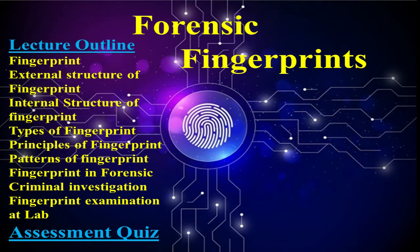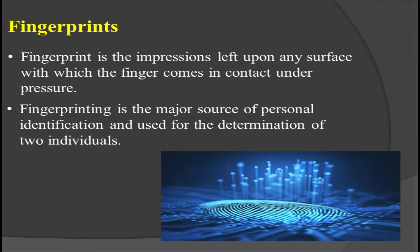Let's start. A fingerprint is the impression left upon any surface with which the finger comes in contact under pressure. When you put your finger on a surface and it takes your finger impression, that is basically a fingerprint. Sometimes it is visible, sometimes it is not visible — it depends upon the surface. Fingerprinting is the major source of personal identification. Fingerprints are unique, and no two fingers have identical fingerprint impressions.